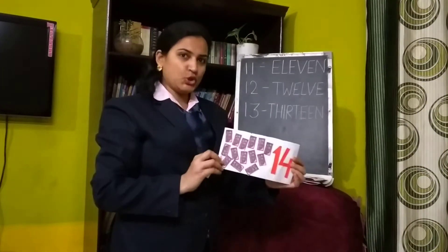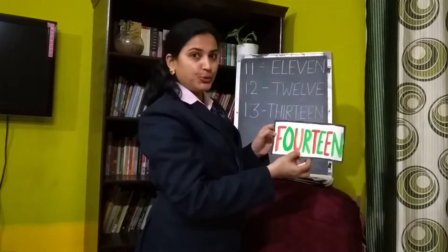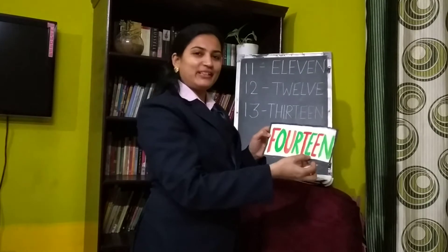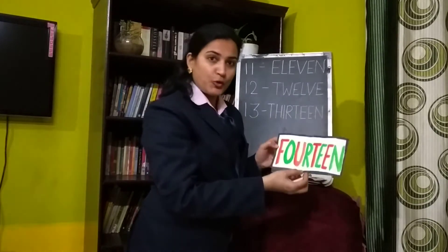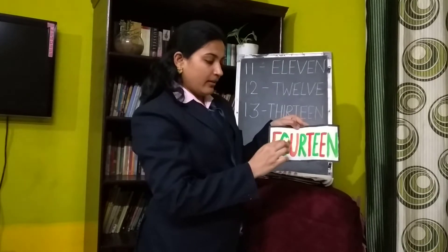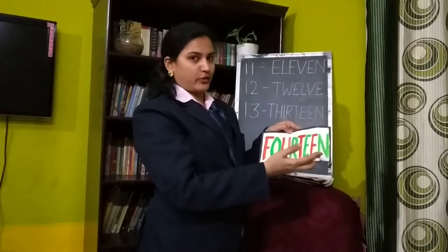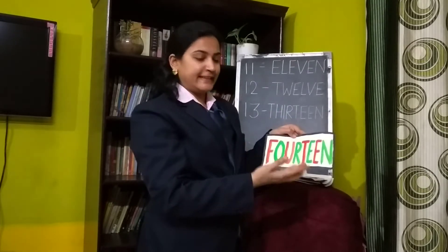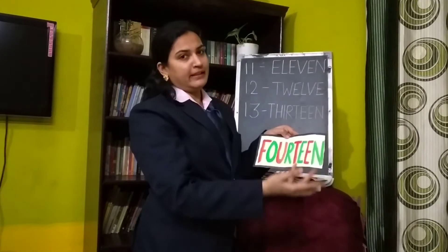Next number is 14. Fourteen chocolates are here. And fourteen in words is F-O-U-R-T-E-E-N. You all know the spelling of four — F-O-U-R — and we just need to add teen with four, so it will become fourteen, F-O-U-R-T-E-E-N. Fourteen.